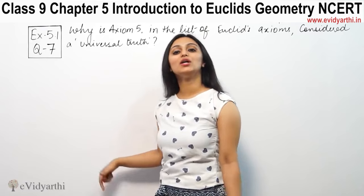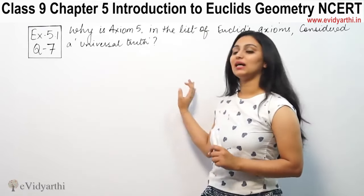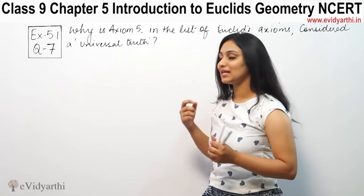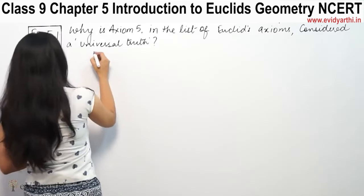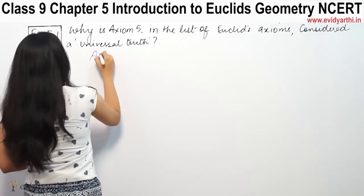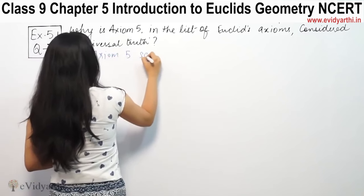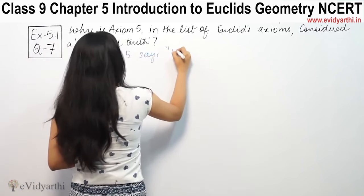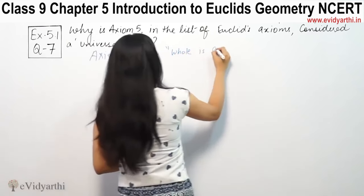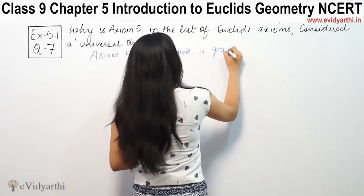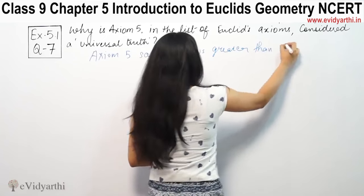Axiom 5 ko universal truth kyun maana jaata hai? Hum Axiom 5 ki baat kar rahe hain, postulate ki nahi. Axiom 5 hamare paas hai — Axiom 5 says: whole is greater than the part.